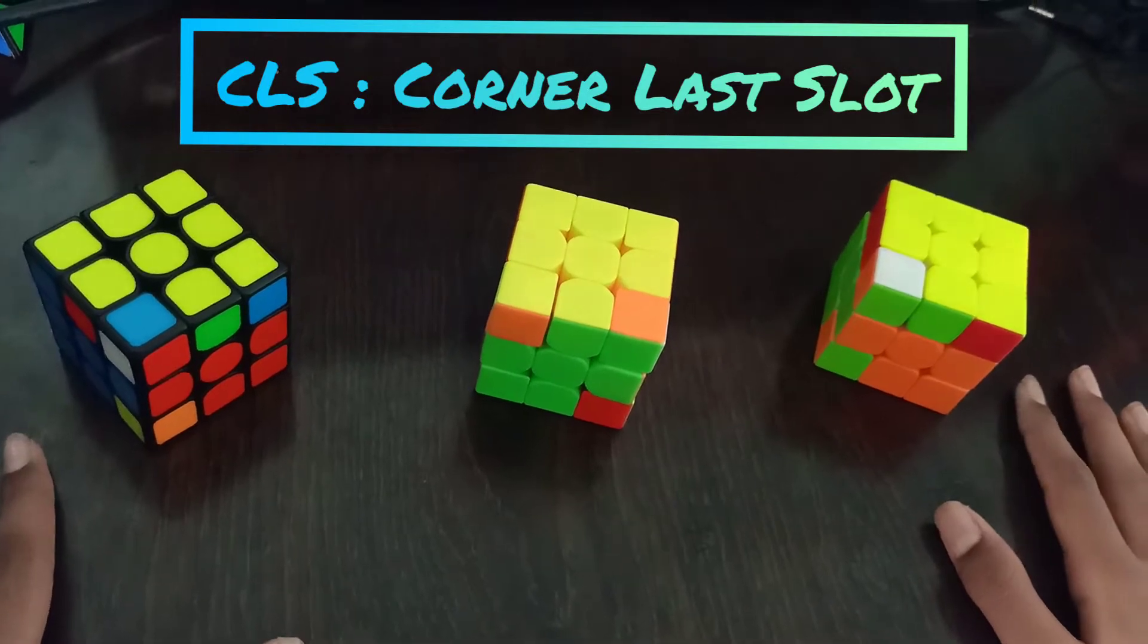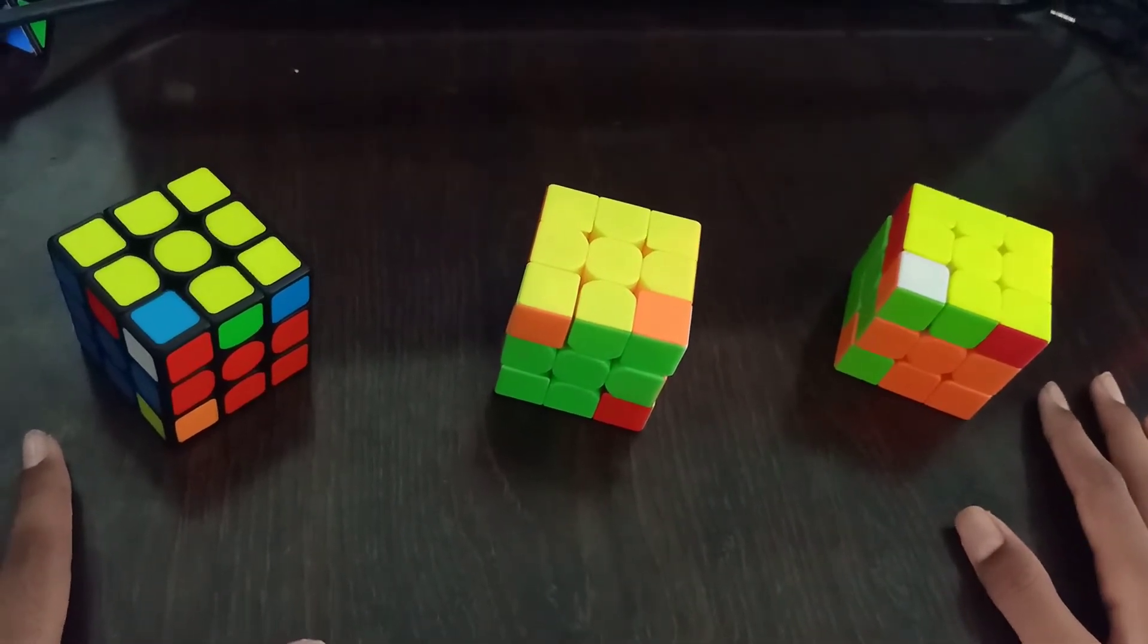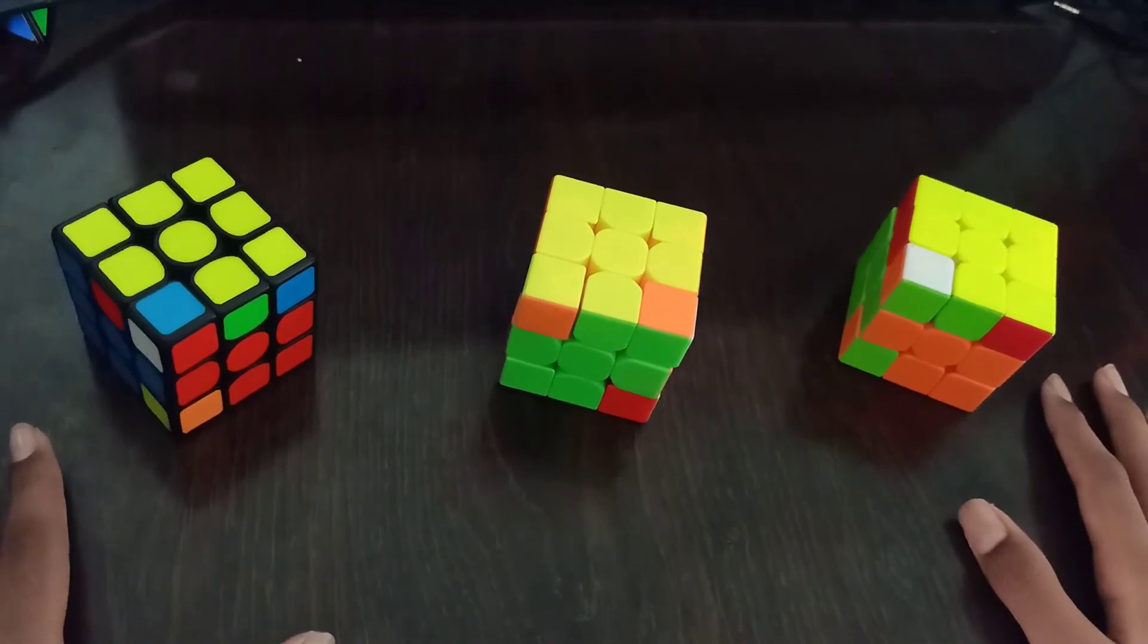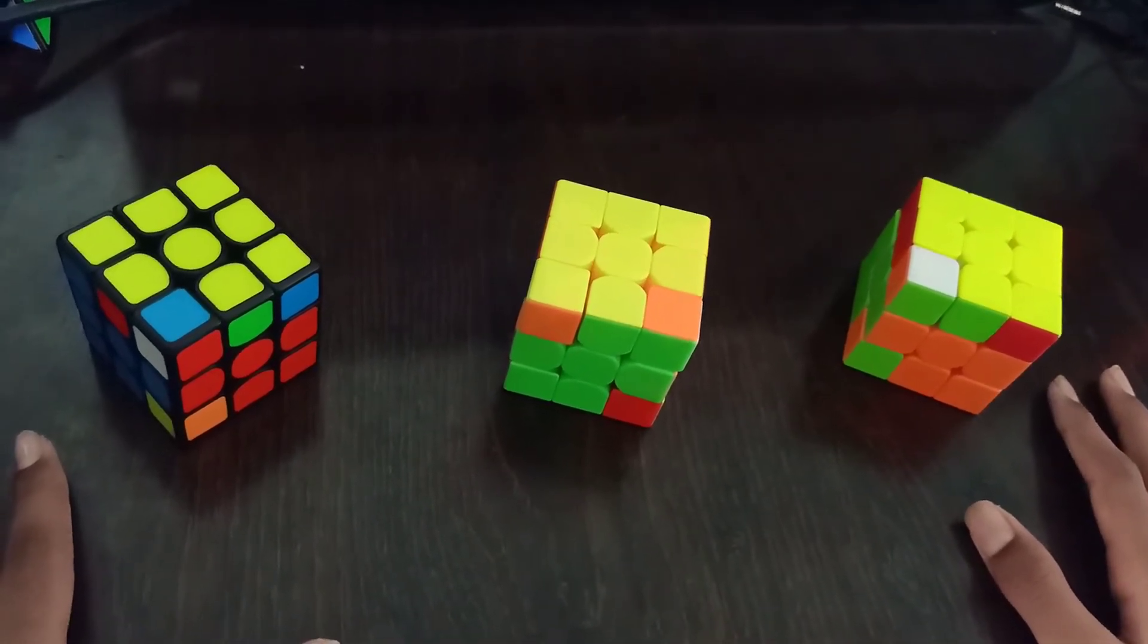If you don't know what CLS means, it's basically a set of algorithms where the corner is not solved in the F2L and we force a PLL skip.